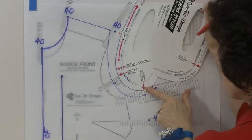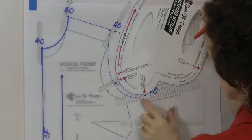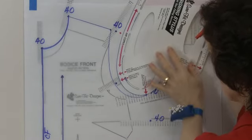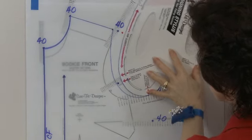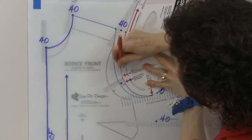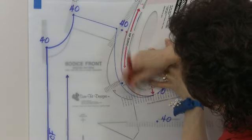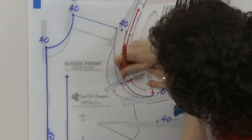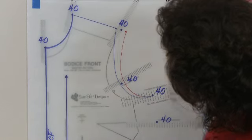Again, arrowhead number two goes into dot number two which is front arm side point number two, and then you would pivot into your broader shoulder point.